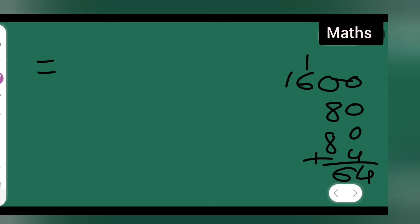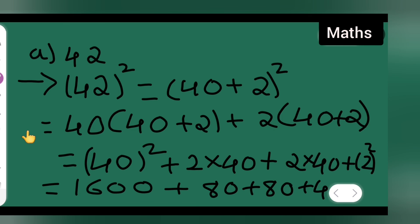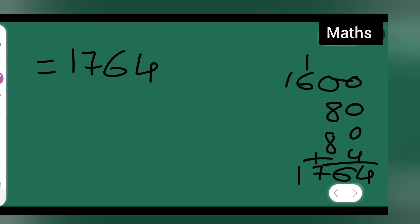So I hope you all have understood how to find the square of the following number without actual multiplication. This is how we have to do it. There is one more method we can use, that is (a plus b) whole square formula. So I hope you all have understood, and thanks for watching.